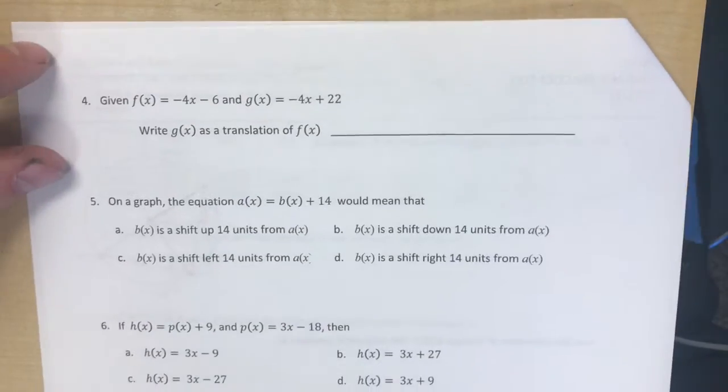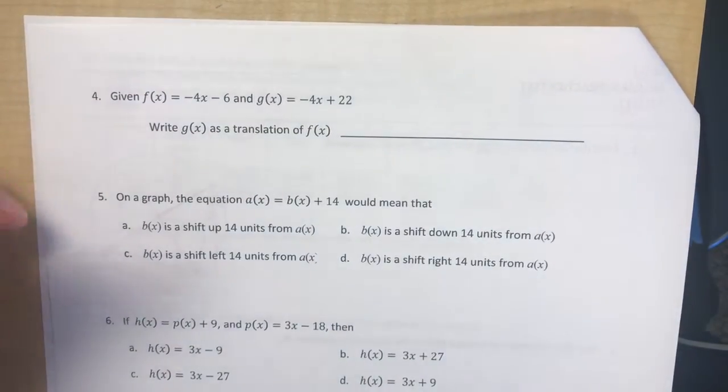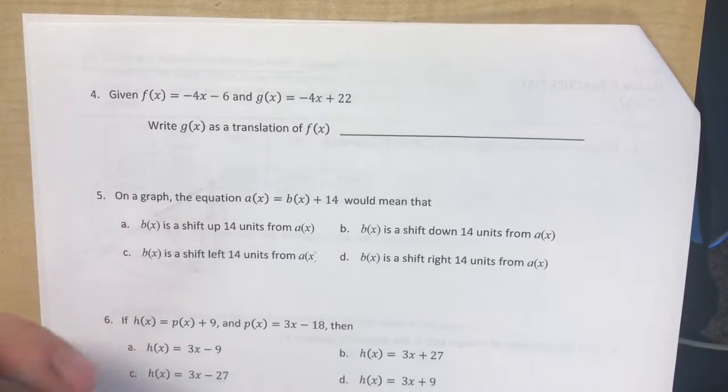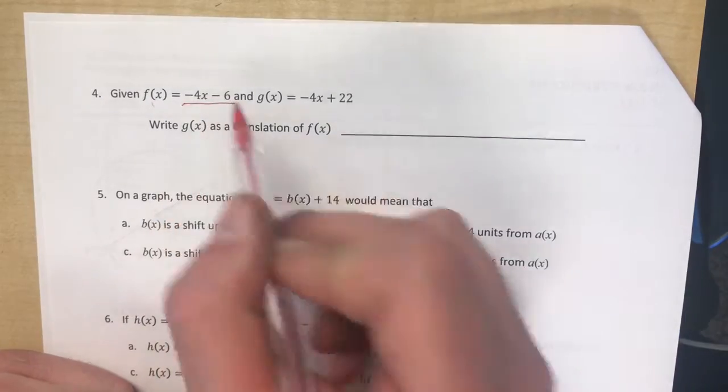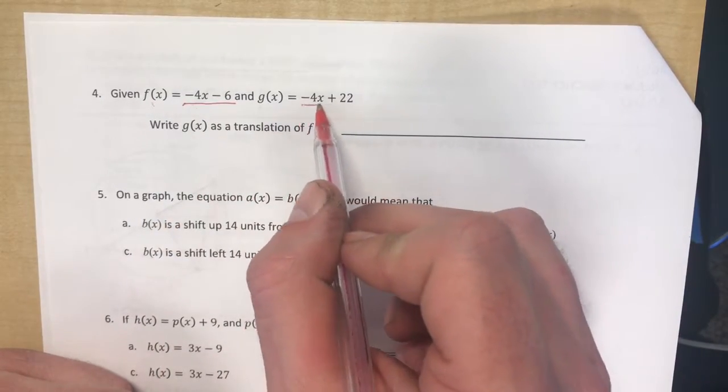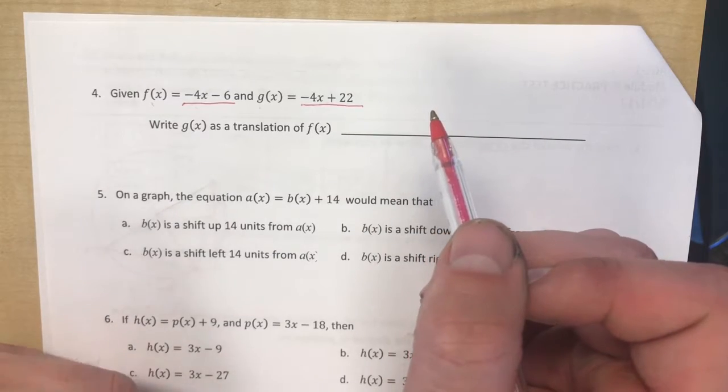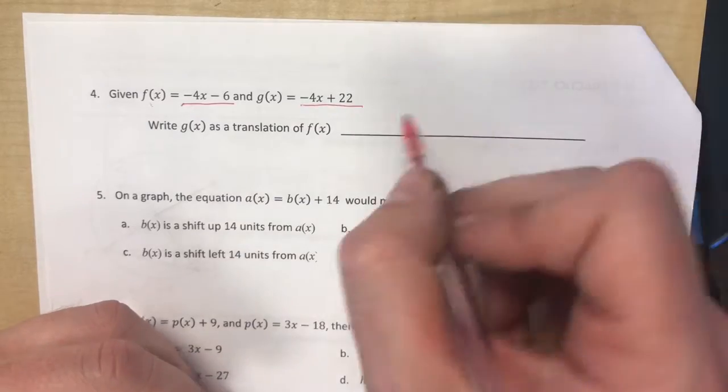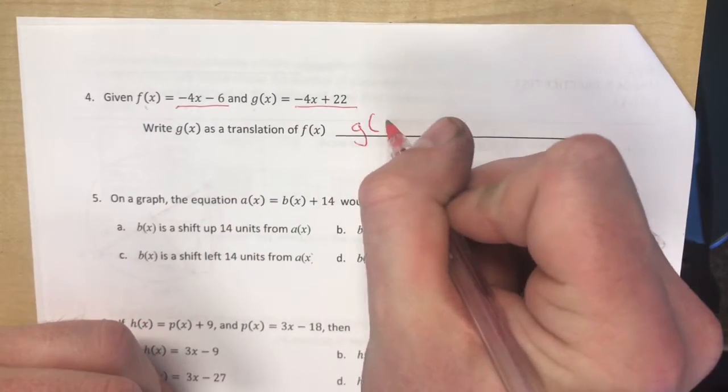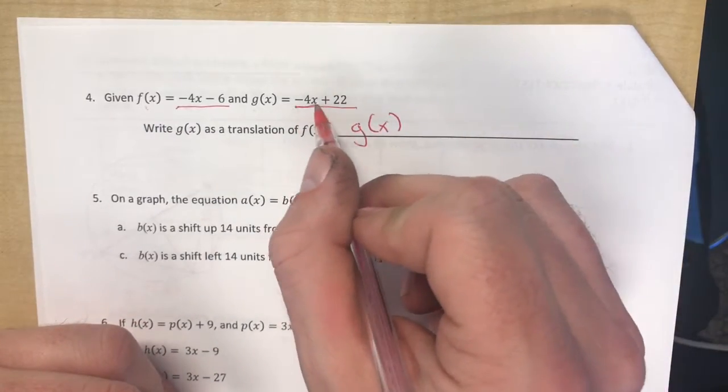For problem number four, I think this is probably, there's so much of it on the test, it's important that we go over these really carefully. So here we're given that f(x) is equal to 4x minus 6 and that g(x) is equal to negative 4x plus 22. We need to write g(x) as a translation of f(x).